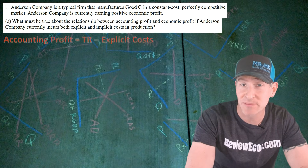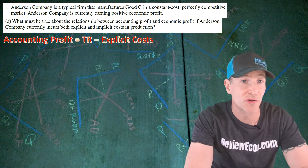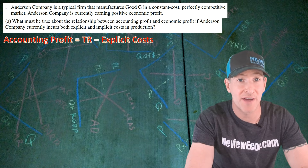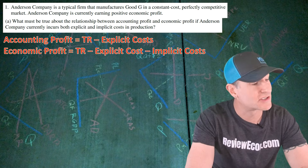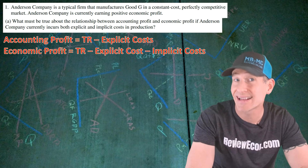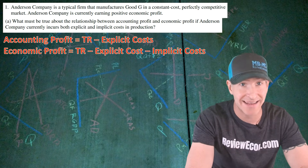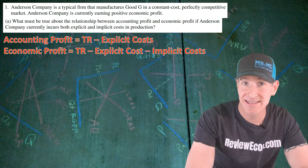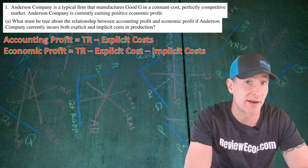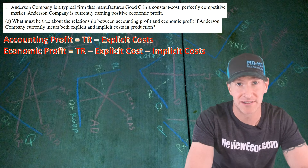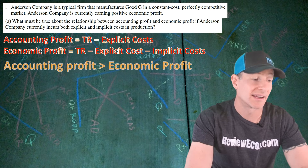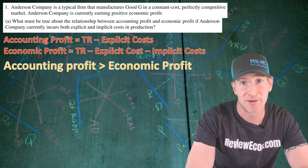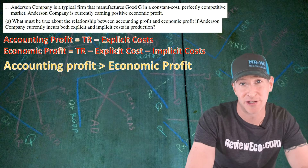In order to answer this question, it's helpful to know that accounting profit is total revenue minus explicit costs. Economic profit, on the other hand, is total revenue minus both explicit and implicit costs. That means when implicit costs exist, accounting profit will always be greater than economic profit. That leads us to our answer: accounting profit is greater than economic profit. And if you state that, you get your first point.